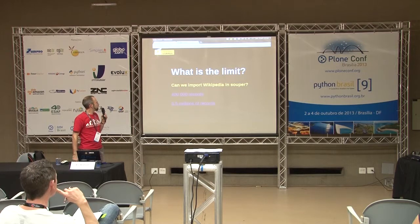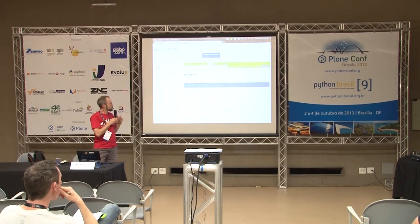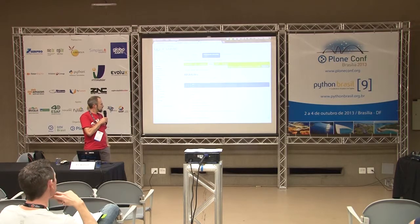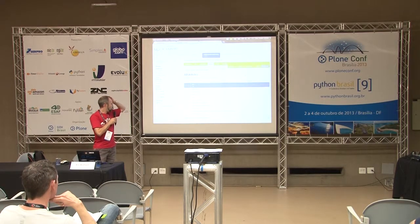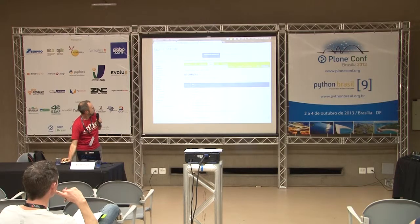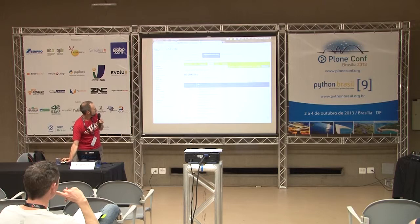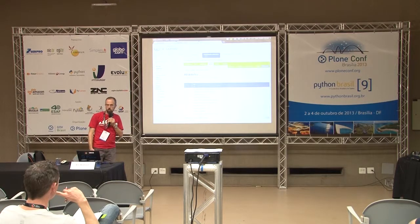First, I'm going to show you how it behaves with only half a million records. Here we have a DataTables component, where we can display rapidly a long list of contents. We have 400,000 entries here, and it's full-text indexed. Let's search for John, for instance. It's instantaneous — really fast. Pagination is working really nicely as well. There is batch mode in Souper which allows me to do that. It's just perfect.